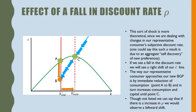The next shock is more theoretical, dealing with changes in the representative consumer's subjective discount rate rho. One could say this results from an aggregate self-discovery process of new preferences. If we see a fall in the discount rate, we'll see a rightward shift of the c-dot line. The representative consumer approaches the new BGP by an immediate reduction in consumption from point A to point B, then increases consumption and capital until point C. If there is an increase in rho, we would observe a leftward shift.